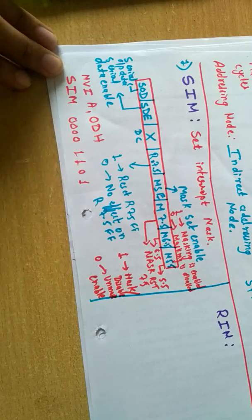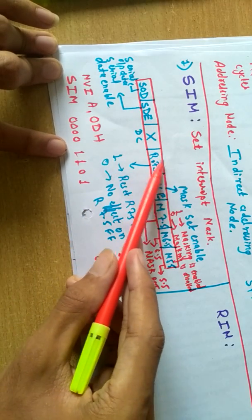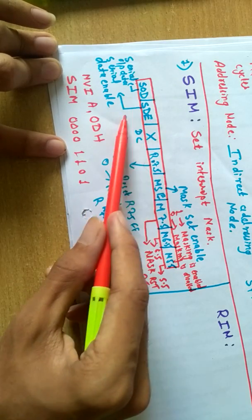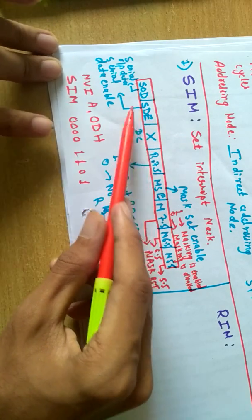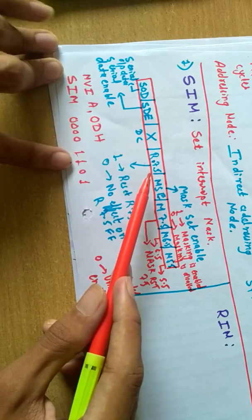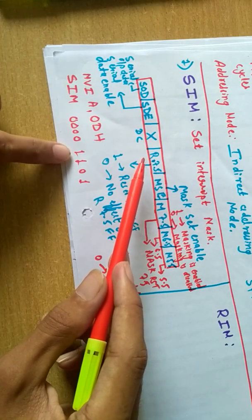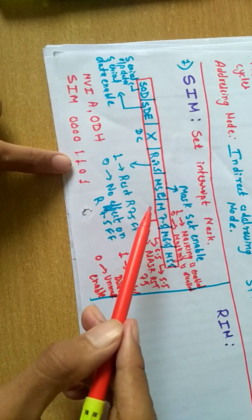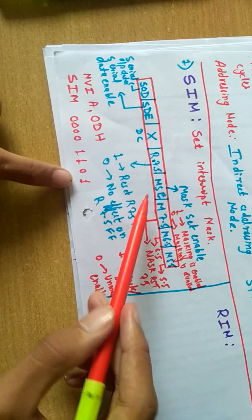0D means the data is 00001101. You can clearly see all these bits are zero, so serial data enable is zero, so serial communication is not possible right now because we have loaded this.